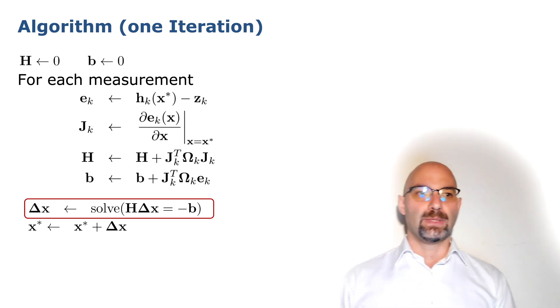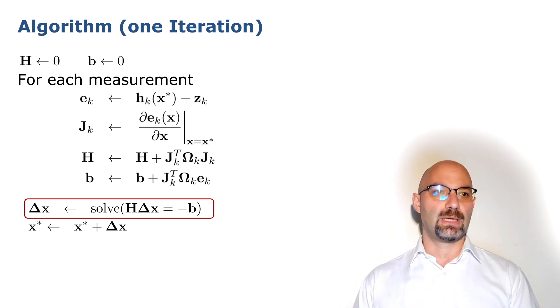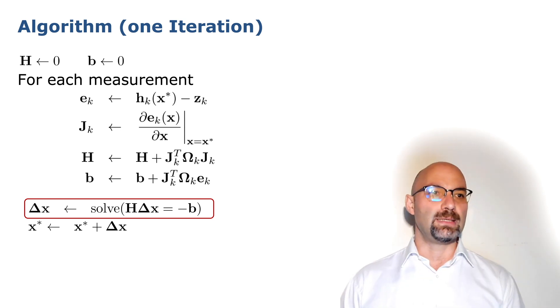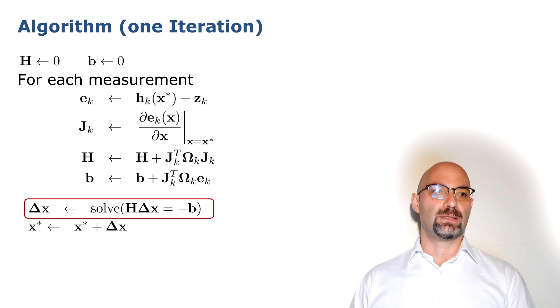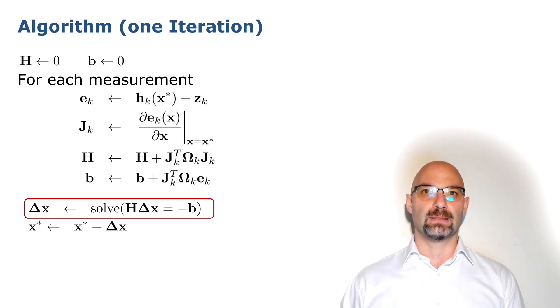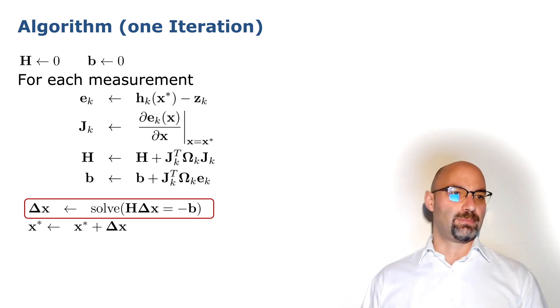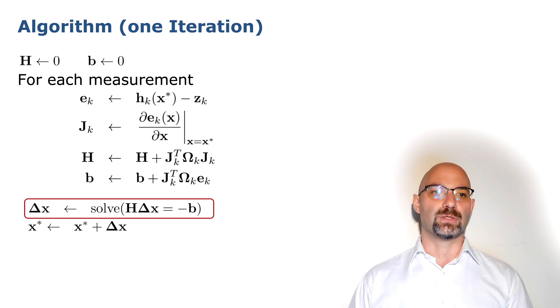Such class of problems is well suited to be approached with iterative minimization methods that start from the initial guess of the solution and iteratively refine by applying perturbation delta x. Such perturbation is obtained by constructing a local quadratic approximation of the original problem in the perturbation delta x. And then the perturbation itself is calculated by finding the minimum of this quadratic form, which is the multidimensional extension of a second degree polynomial. In this slide we summarize one iteration of the minimization algorithm.